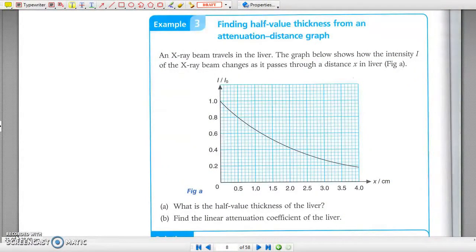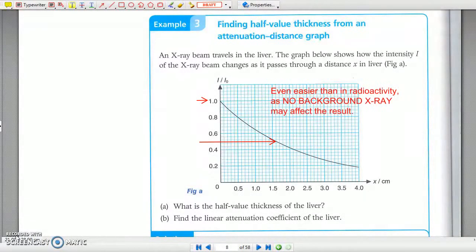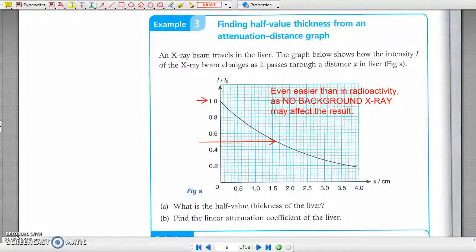Example 3: Finding half-value thickness from an attenuation-distance graph. Part a asks you to find the half-value thickness. This is easy, as you can directly read it from the graph.